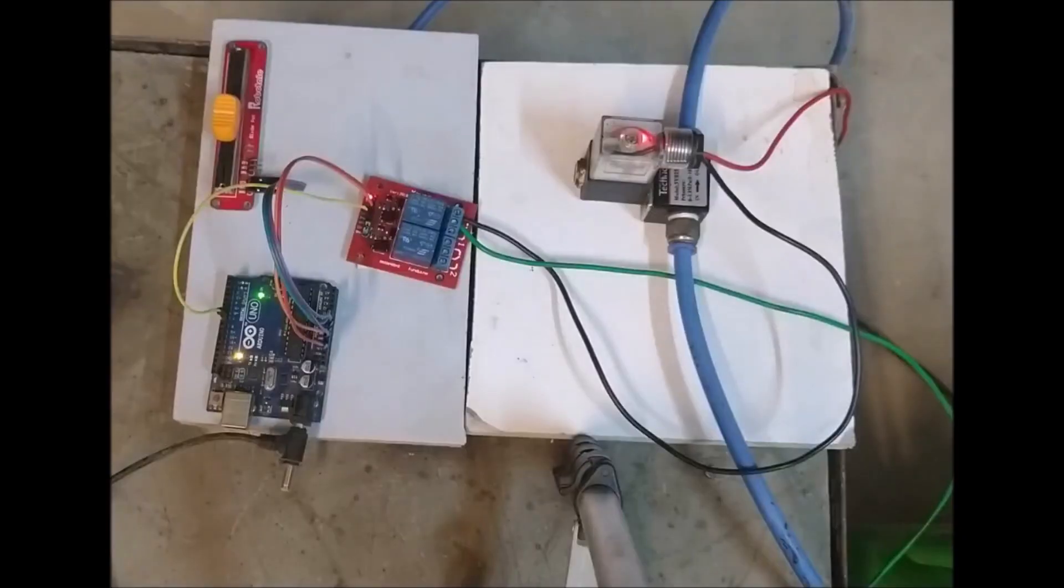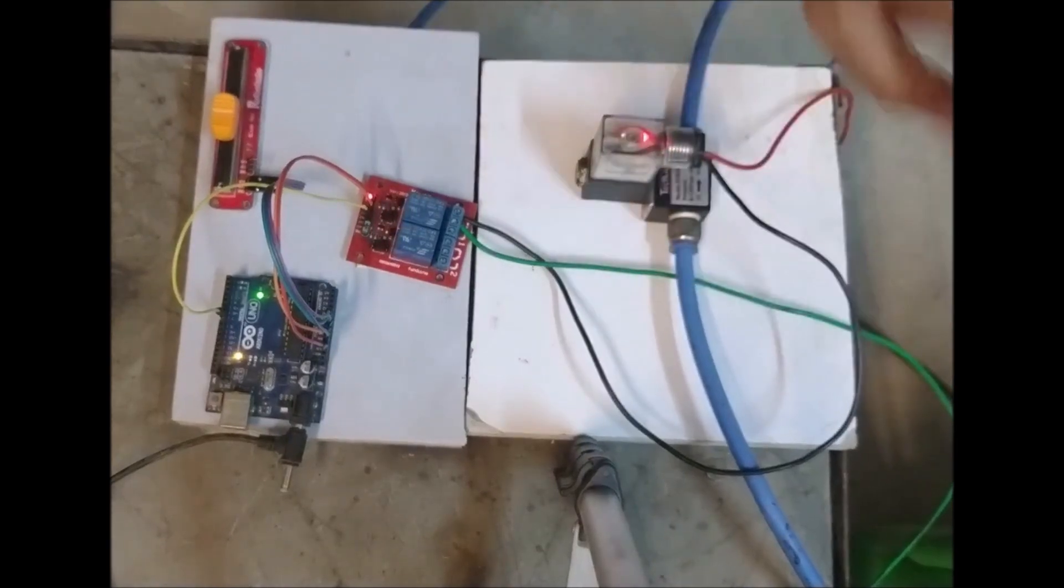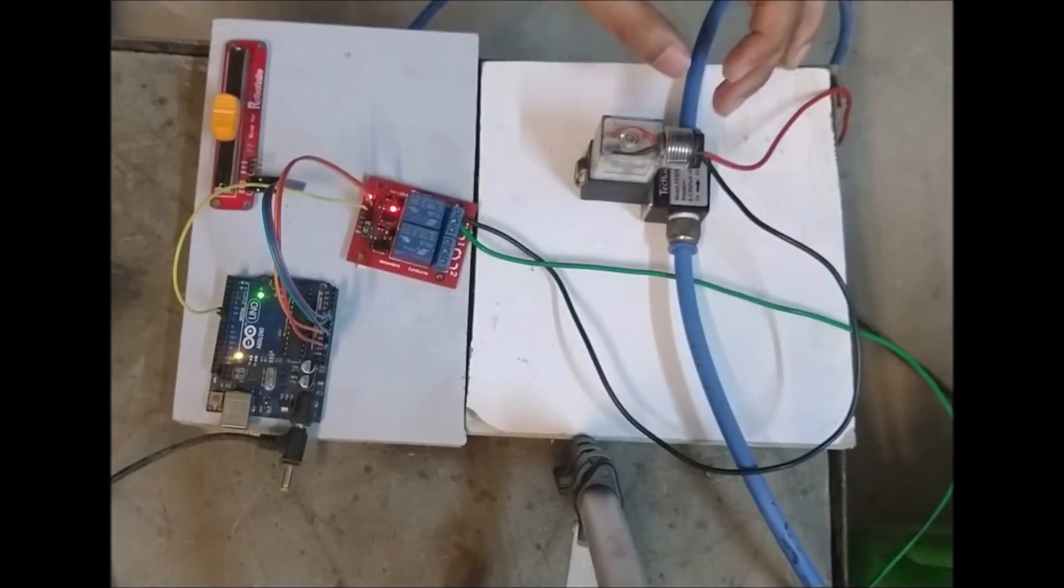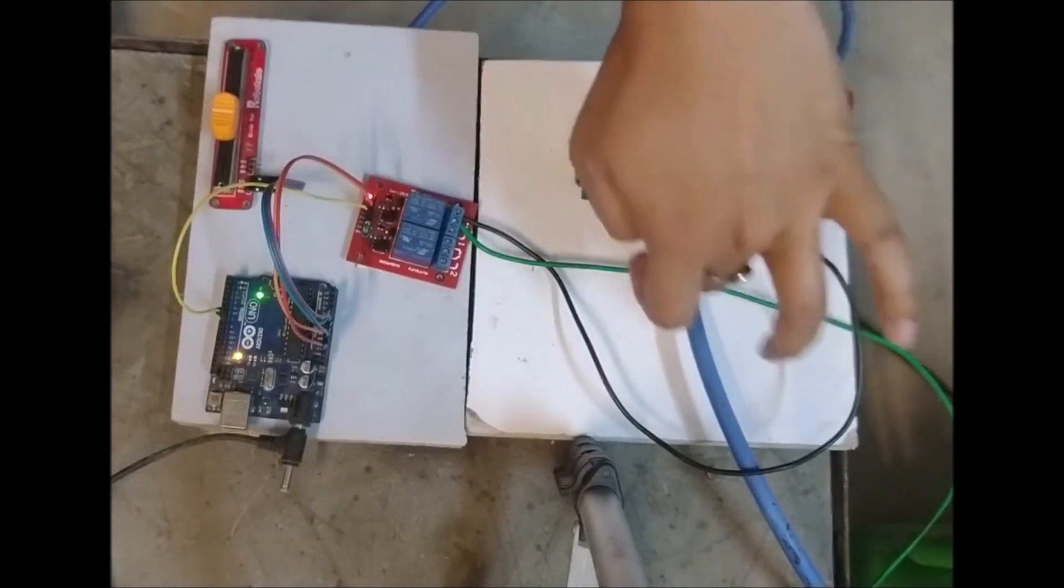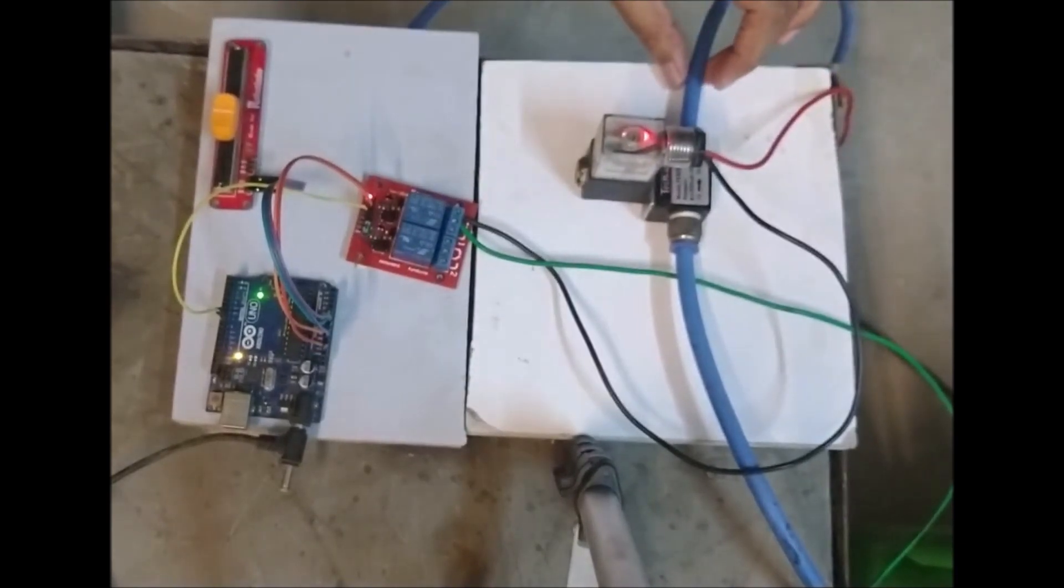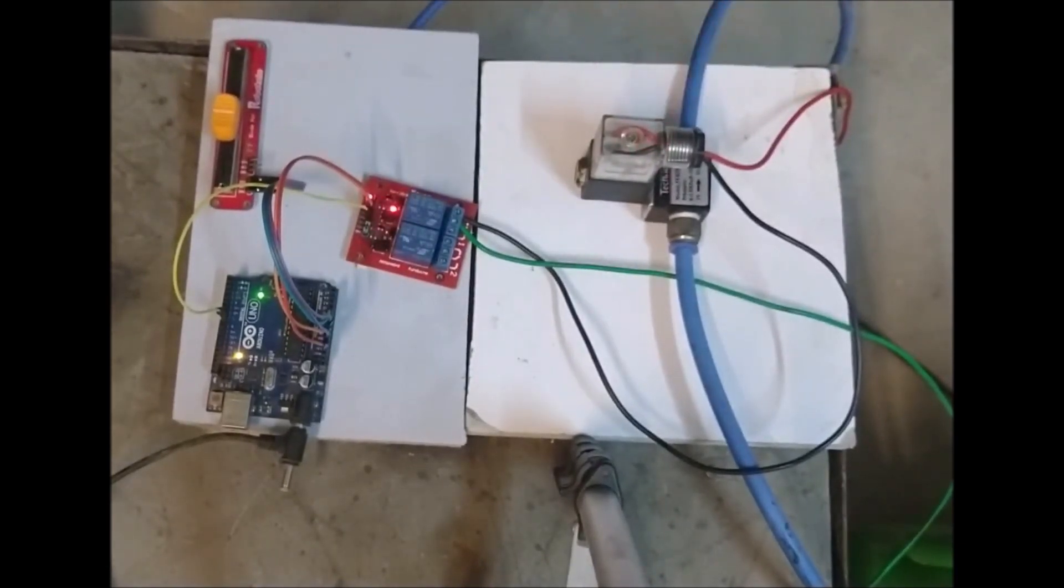So let's have a look. So I've turned it on now. This is the input and this is the output. When the light is on or the solenoid is on, the compressed air is coming from the input tube to the output tube. And when it's off, it's not doing that.